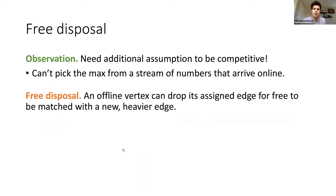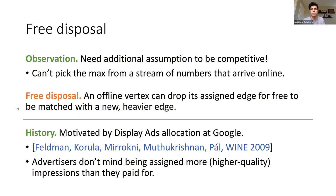There's one other assumption we need for the edge-weighted bipartite matching problem to really make sense. This is called the free disposal assumption. The idea is that an offline vertex can rematch itself — it can drop an edge that has been assigned to it if a higher-value candidate comes later. Otherwise we can get stuck in a very bad way. This assumption was first introduced by Feldman et al. in 2009, motivated by the display ads allocation problem at Google.